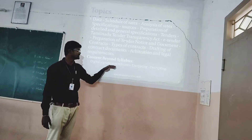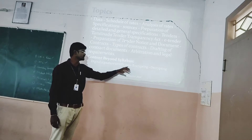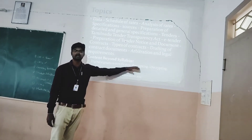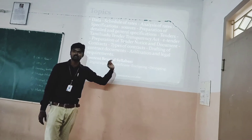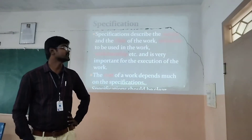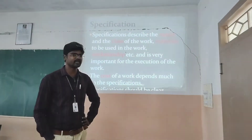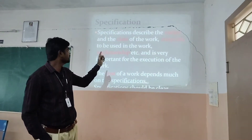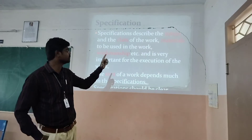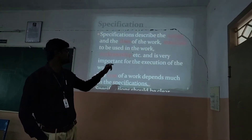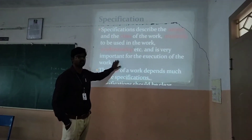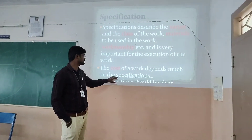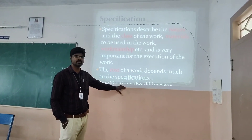If you are aware of this unit, you will also cover digital signature certificates, encrypting and decrypting as part of the overall unit. First, specifications. Specifications describe the nature and class of the work, materials to be used in the work, and workmanship. It is very important for the execution of the work. The cost of the work depends much on the specifications, so it should be clear.